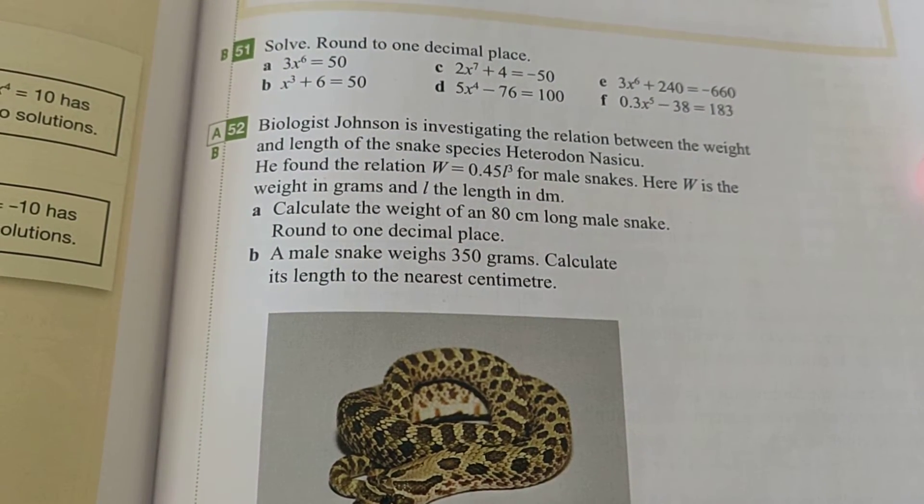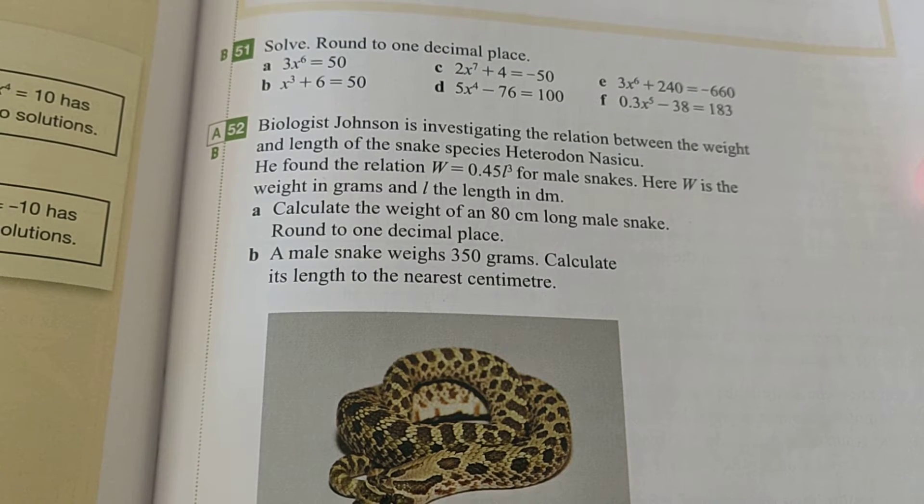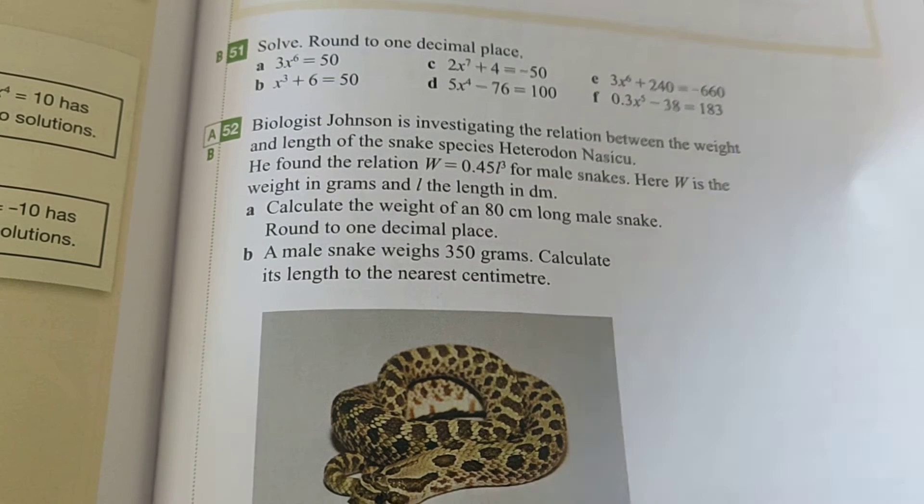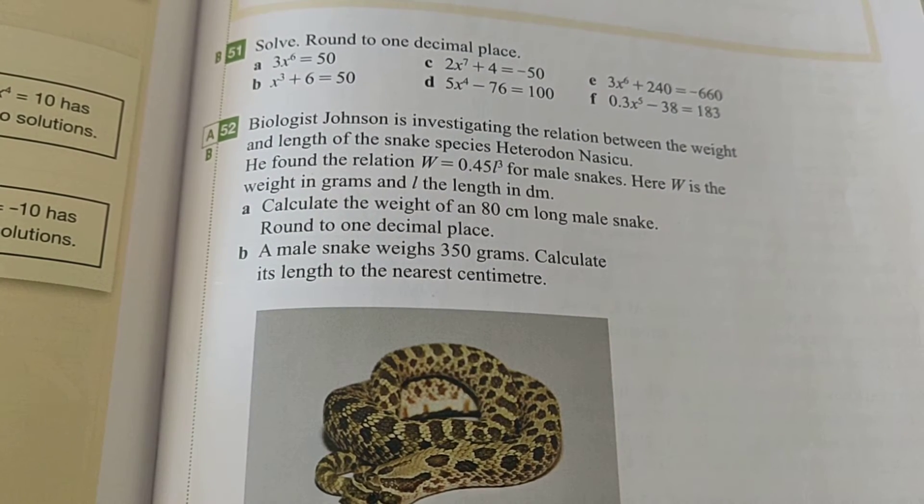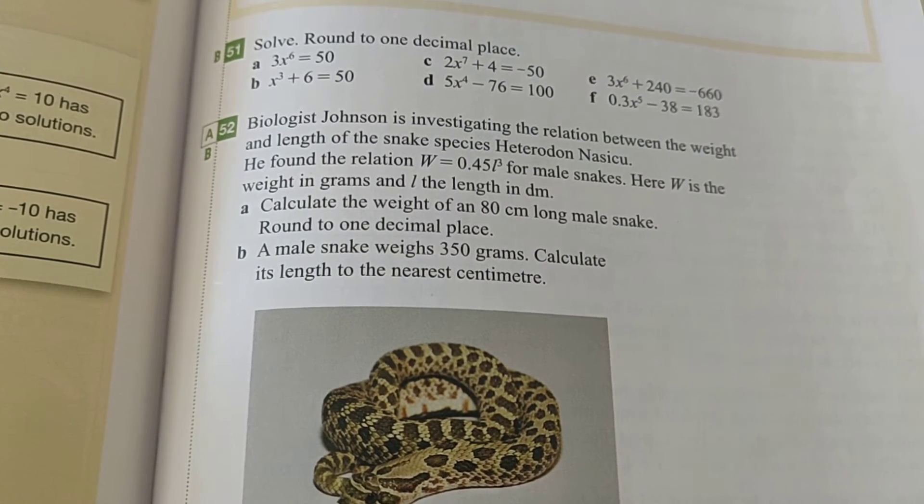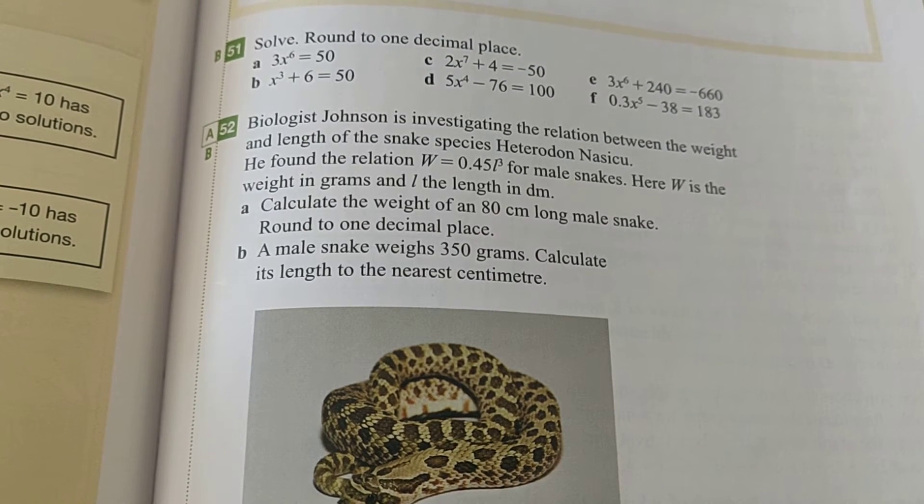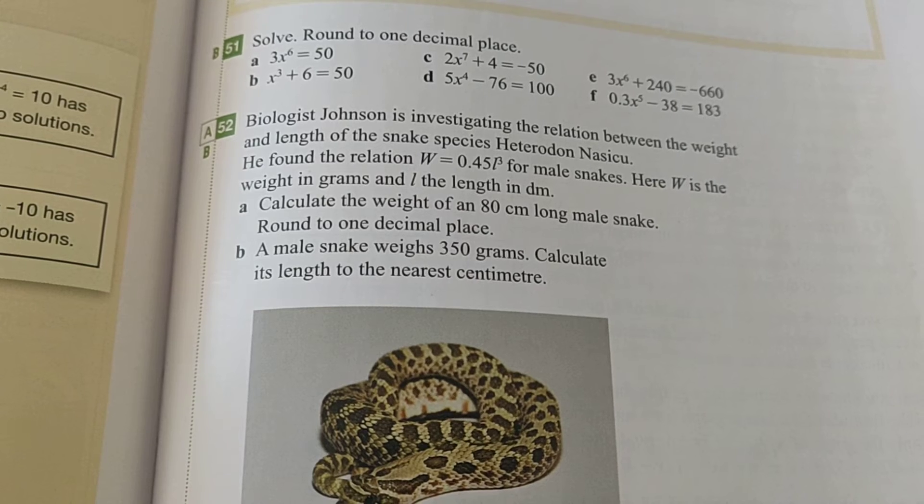It says, biologist Johnson is investigating the relation between the weight and length of the snake species, heterodon nasiku. He found the relation W equals 0.45 L to the power of 3 for male snakes. And W is the weight in grams, and L is the length in decimeters.